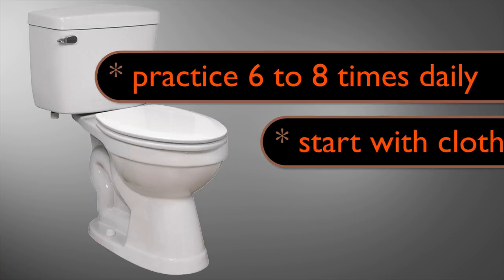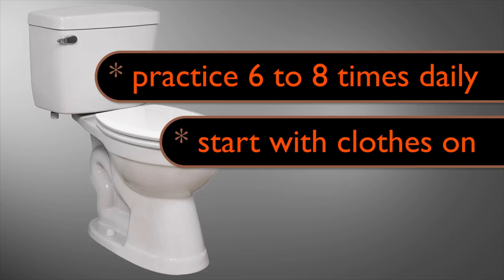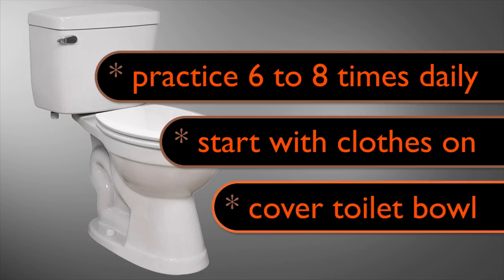Other options for teaching this skill are having your child start with their clothes on at first to become accustomed to sitting on the toilet, or allowing the child to sit with the toilet bowl covered. You can use cardboard under the seat, gradually cutting a hole larger and larger, or a towel under the seat that is gradually removed.